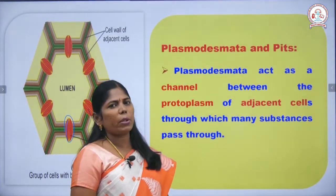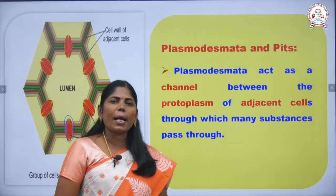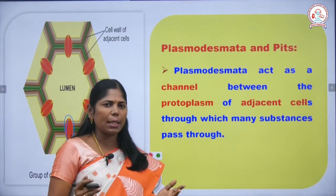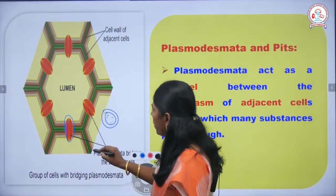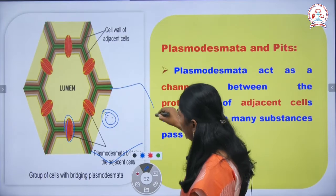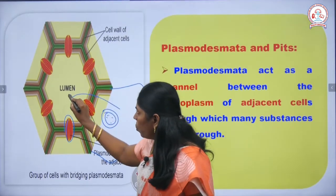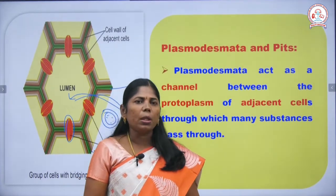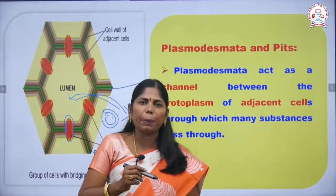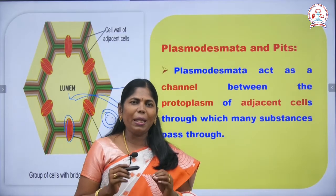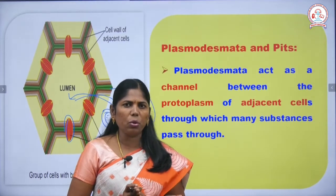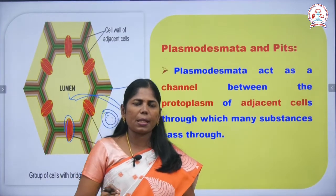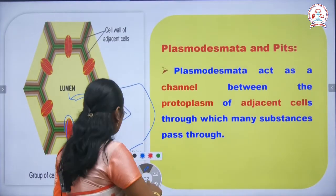Plasmodesmata is a channel between the protoplasm of adjacent cells. The protoplasm moves from one cell to another through the membrane with the help of pits. The main function of plasmodesmata is to allow substances to pass from one cell to another through these pores.